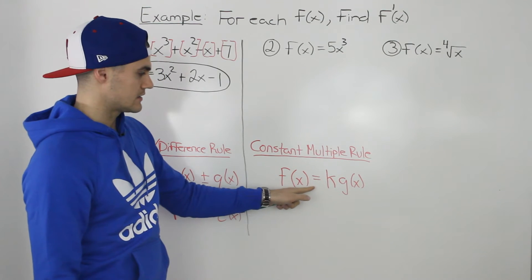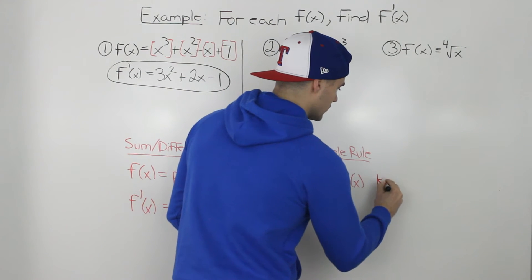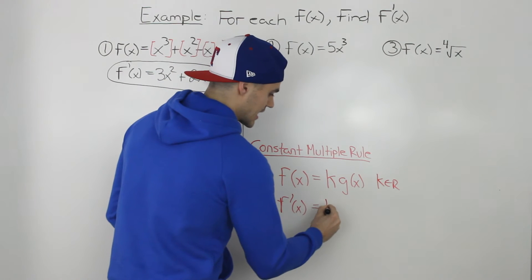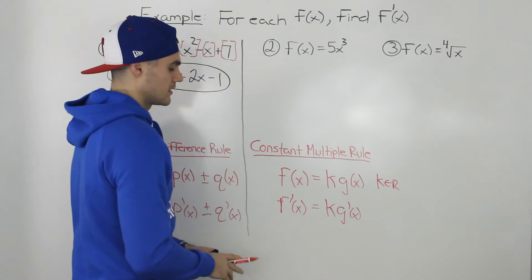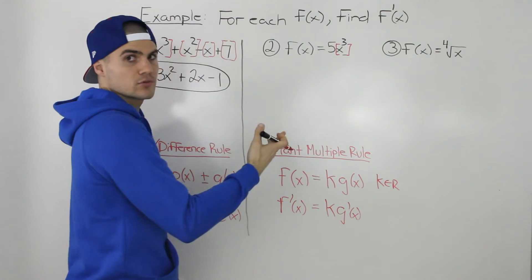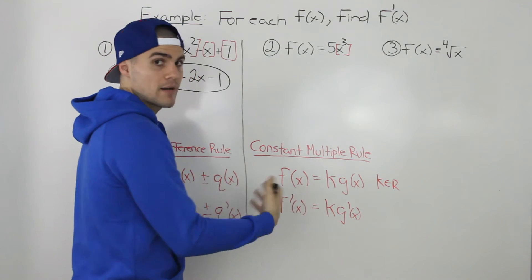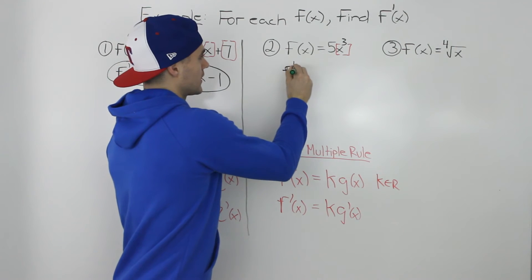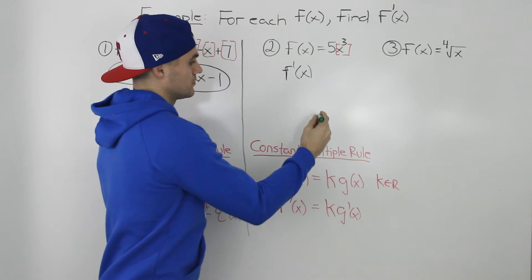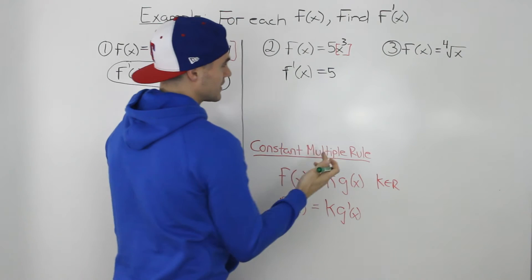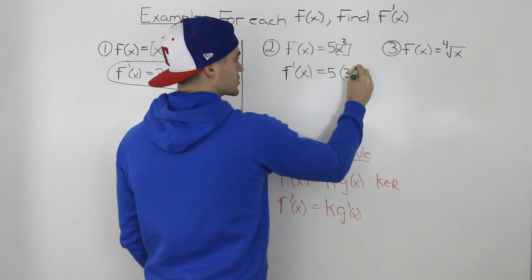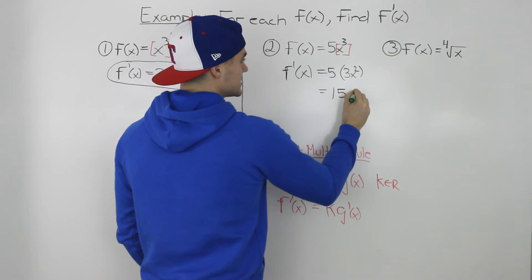If we have a function equal to a constant k — any real number — times another function, then the derivative of f of x is just that same constant times the derivative of the attached function. Going back to this example, we can take x cubed, deal with it separately, find its derivative, and then multiply the 5 back in. So f prime of x: the 5 stays as is, and the derivative of x cubed using the power rule is 3x squared. So we multiply 5 and 3 to get 15x squared.